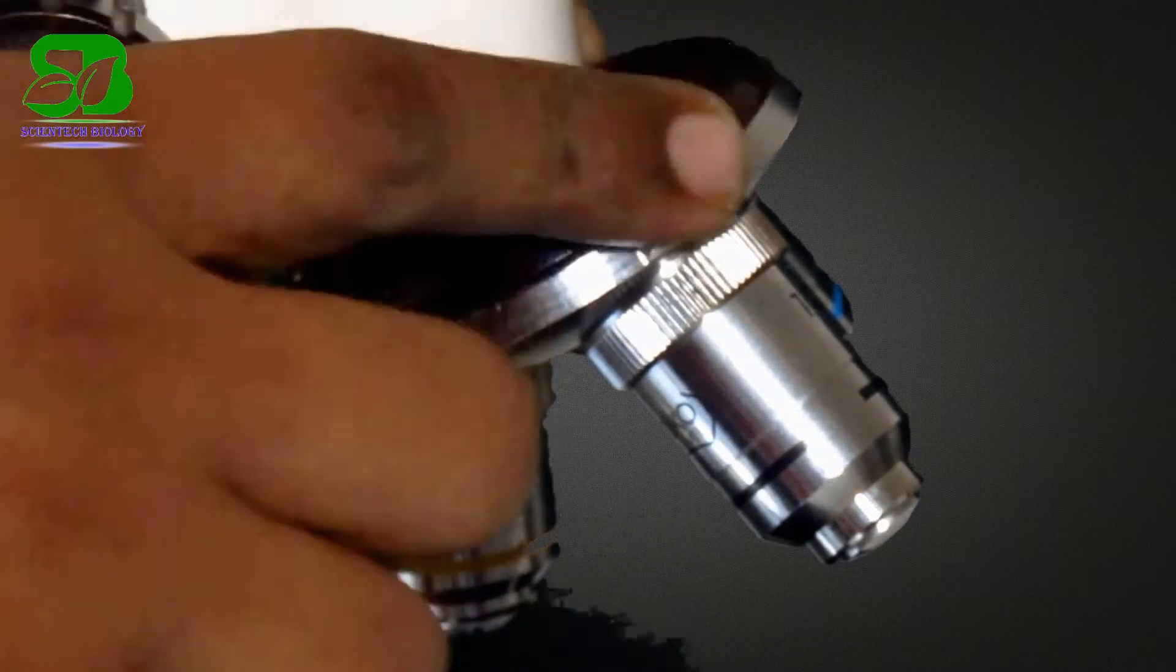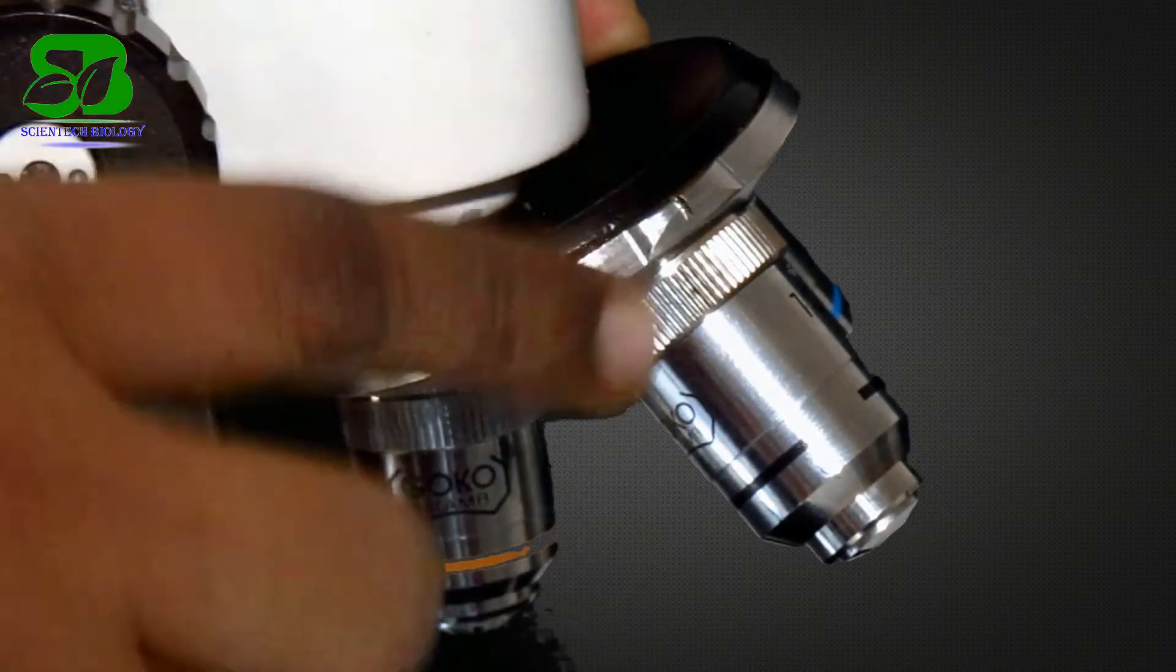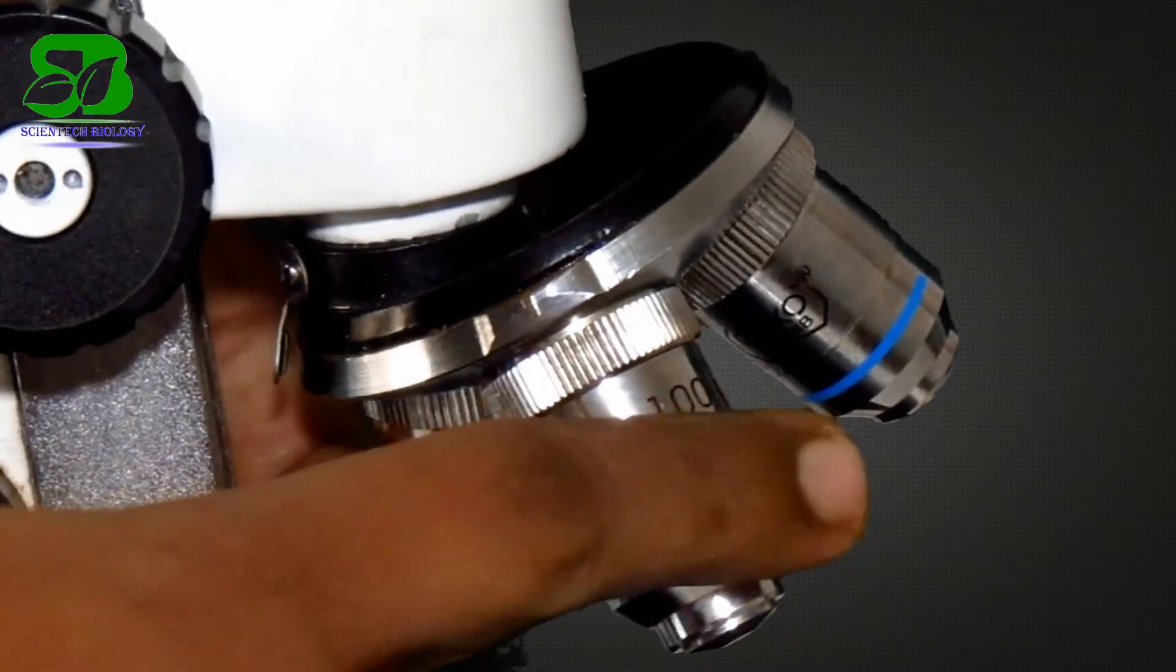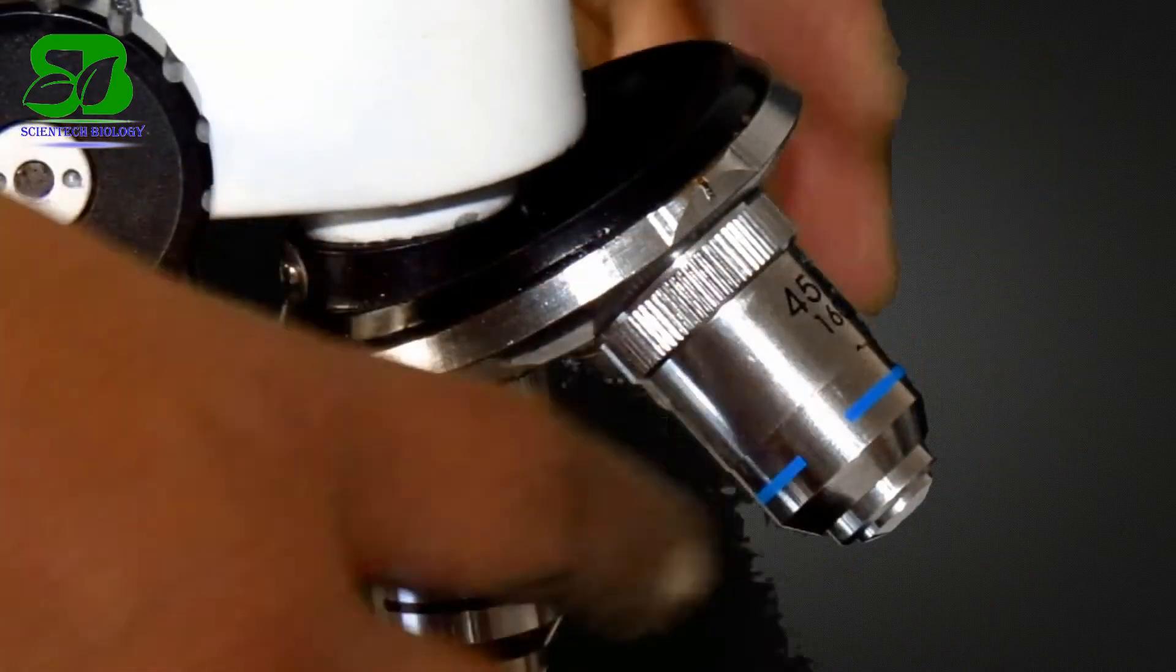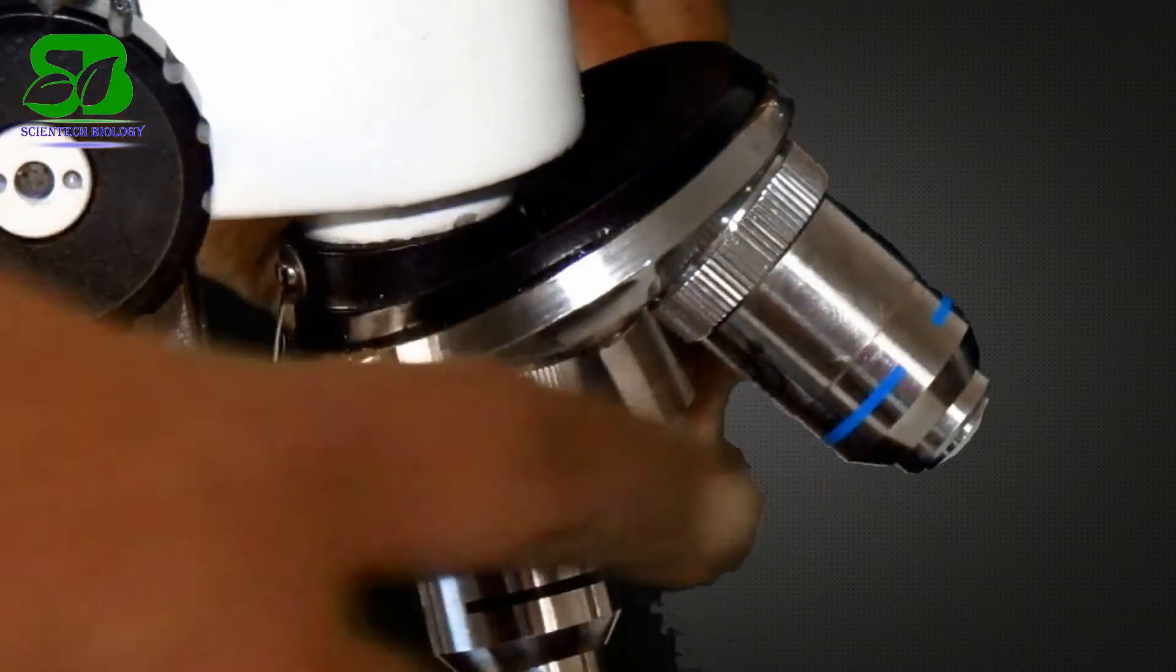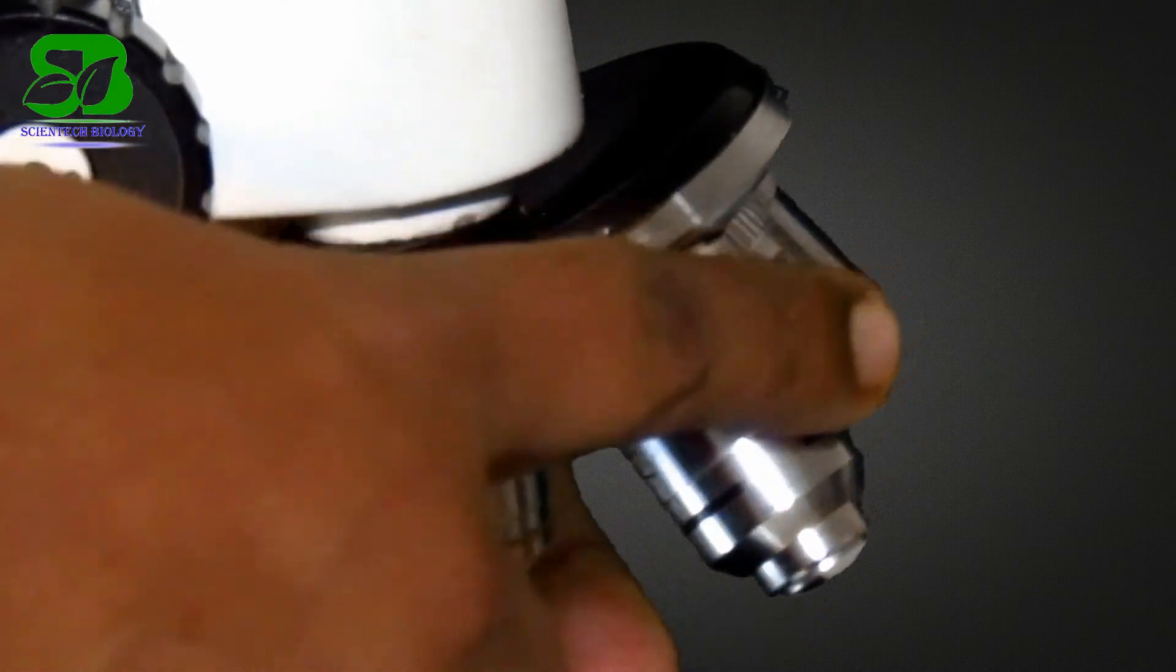This part of the microscope is the nosepiece and it holds the objective lenses. You can rotate it to easily change the power of lens. Here you will find 3 or 4 objective lenses. They typically consist of 10x, 45x, or 100x power.